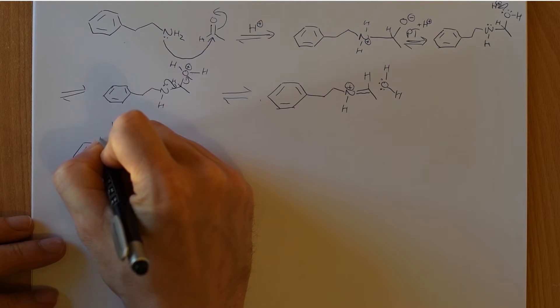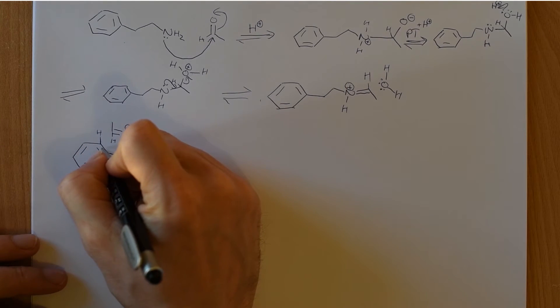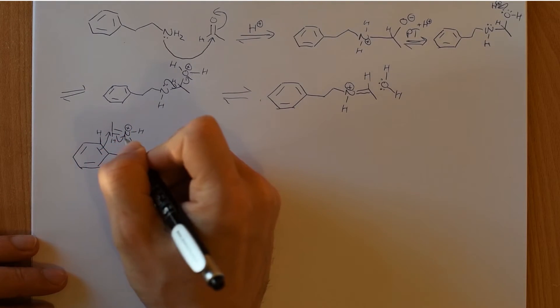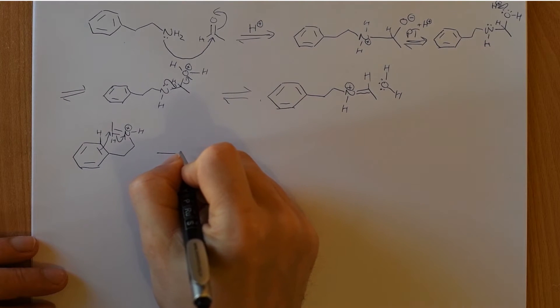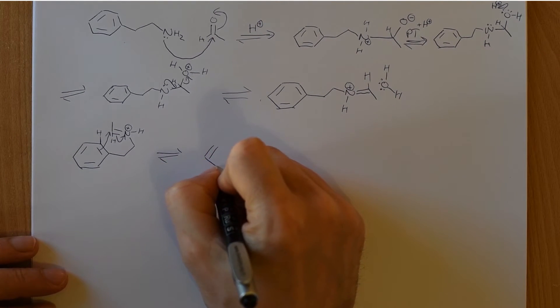So, electrophilic aromatic substitution, we can draw in this hydrogen here, because it's going to be necessary to draw it in. It's going to attack and relieve the positive charge on the nitrogen. And what do we have?